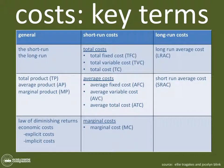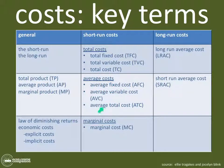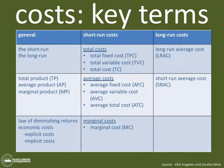As we've been doing throughout this entire series, we've been orienting ourselves on this chart of costs — the key terms. Here we're looking at the short-run costs: total fixed, variable, and total costs; average fixed, average variable, and average total; and marginal costs. We're going to focus on this column. If you're looking for other terms, check out some earlier or later videos. But right now, let's take a look at total, average, and marginal costs.